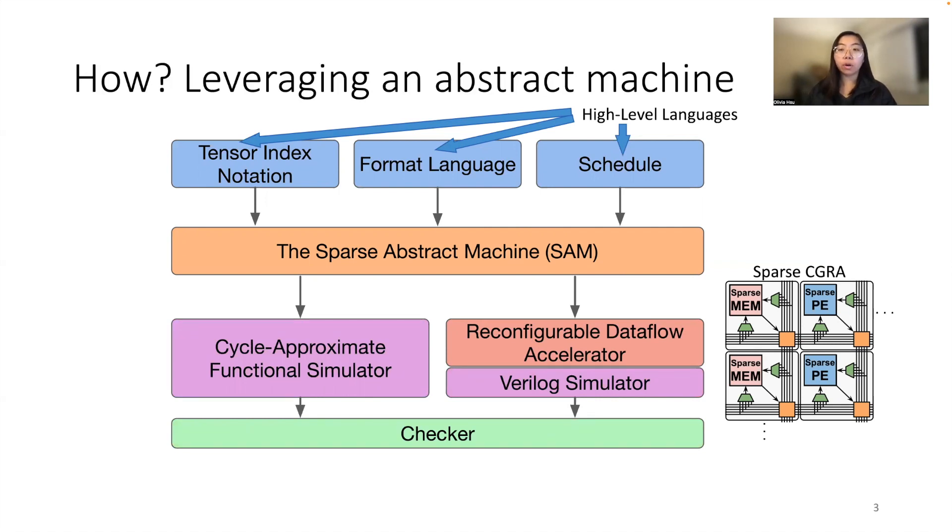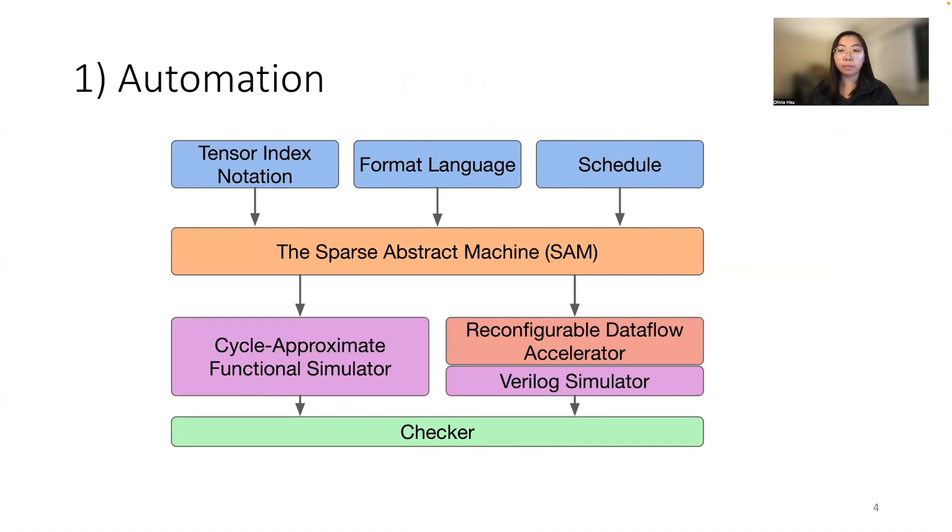Now I will provide four concrete benefits that we found when using our sparse abstract machine. The first benefit is the high amount of automation in our tool flow. Specifically, to implement a new operation, or in our case a new SAM primitive, we only need to hand implement two things.